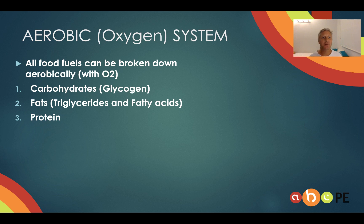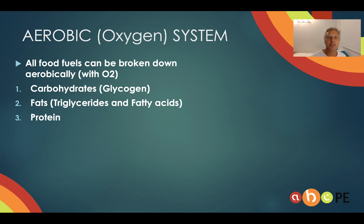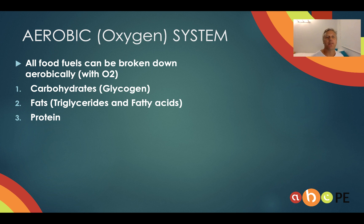The aerobic or oxygen system is where all food fuels can be broken down. Anaerobic glycolysis could only use carbohydrates or glycogen, and the ATP-PC system could only use phosphocreatine. The aerobic system uses carbohydrates, fats, and protein, but we have to have oxygen available. The only way we can have oxygen available is by exercising at a slower rate — that is, a lower intensity.